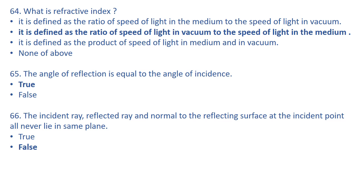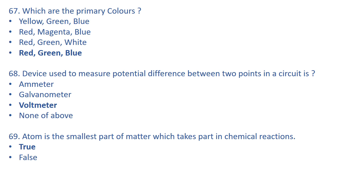The primary colors are red, green, and blue. All other colors are produced by mixing these in different proportions. A device used to measure the potential difference between two points in a circuit is a voltmeter — the right answer.